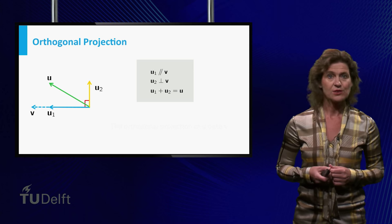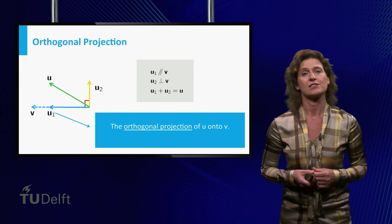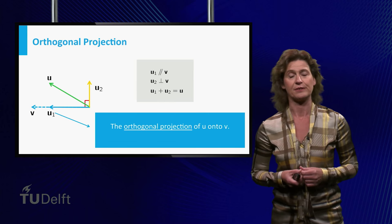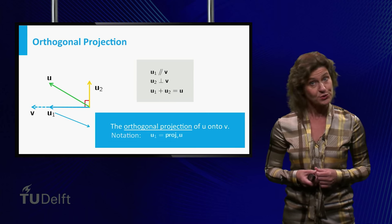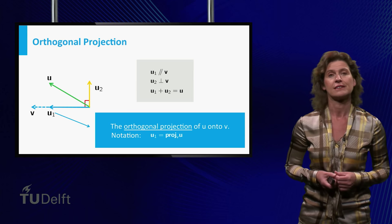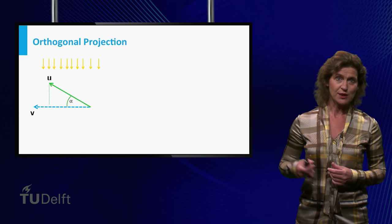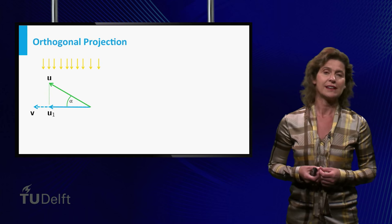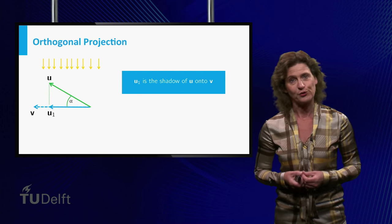The vector u1 is called the orthogonal projection of u onto v. There is even a separate notation for it. Imagine light shining from above onto u, then u1 is in fact the shadow of u on v.